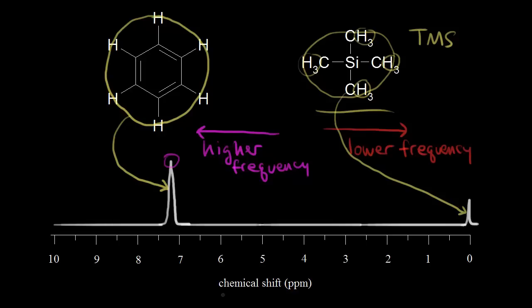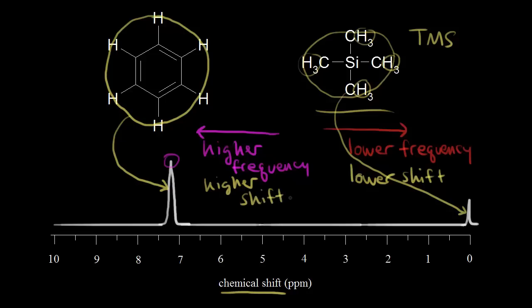Instead of talking about frequency, we can talk about chemical shift values. The chemical shift is a similar idea to frequency. As you go to the right, you're talking about a lower chemical shift, and as you move to the left on an NMR spectrum, you're talking about a higher chemical shift. So the protons on benzene have a higher chemical shift than the protons on TMS, and we set TMS equal to zero — it's our standard.